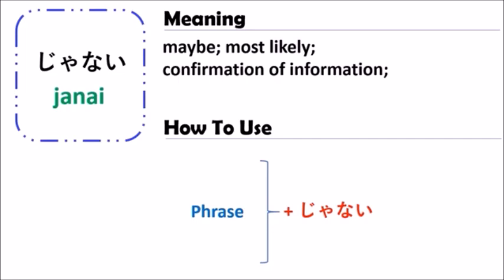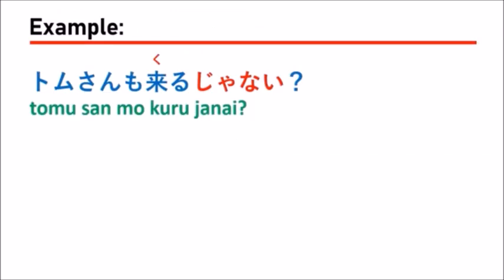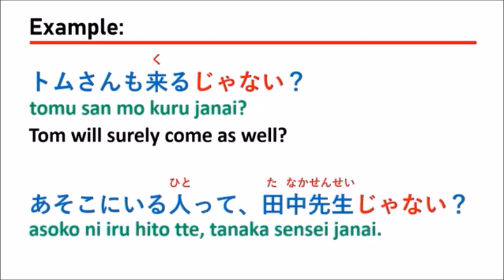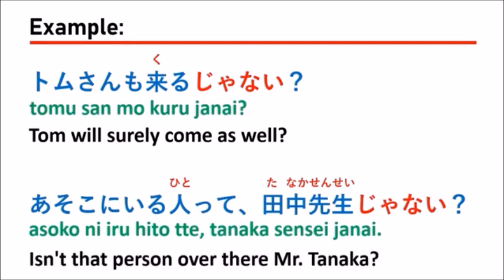Now let's look at some examples together. The first example is: tomu san mo kuru ja nai — which means 'Tom will come as well, right?' The next example is: asoko ni iru hito te tanaka sensei janai — which means 'Isn't that person over there Mr. Tanaka?'